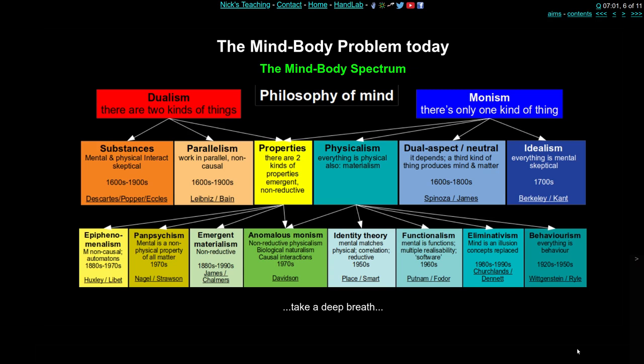In the yellow box are forms of property dualism. This is the idea that there may not be two kinds of separate stuff in the universe, but property dualists would say that mind is definitely a different thing than matter — a different property of physical things that can't be reduced to matter alone. By 'reduce' I mean you can't explain away the mind using different concepts. However much neuroscience progresses, you'll never really be able to explain away mental states. There'll always be something special and different about mental states. That's property dualism, in the yellowy-greeny colours on the left of the bottom row.